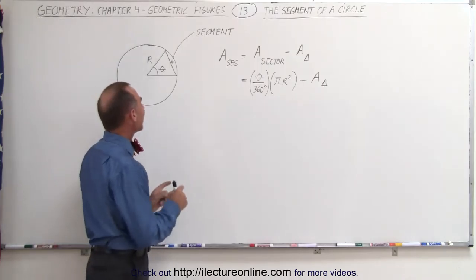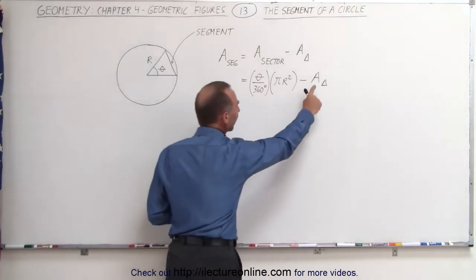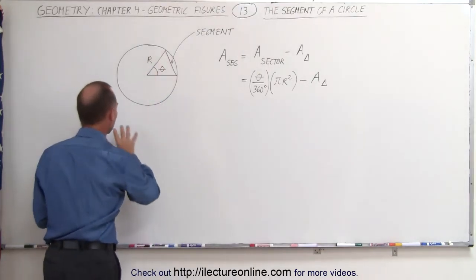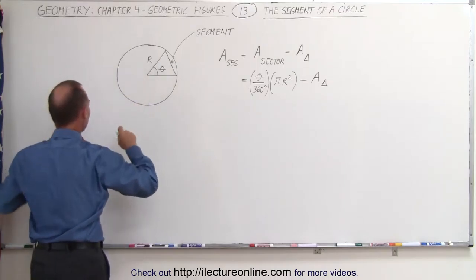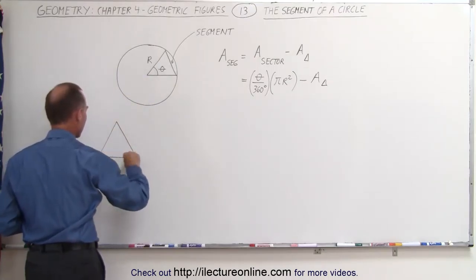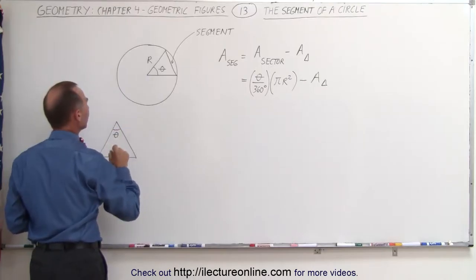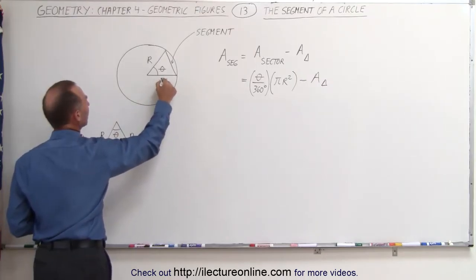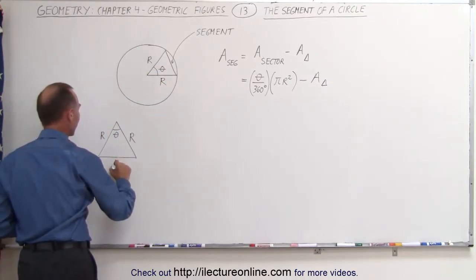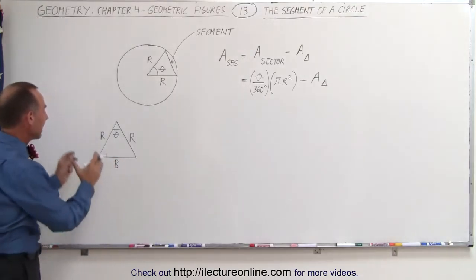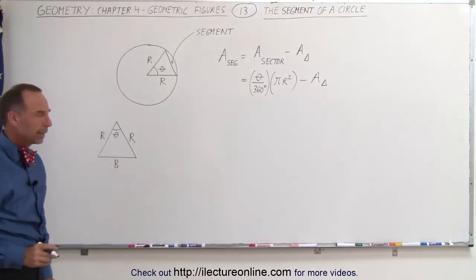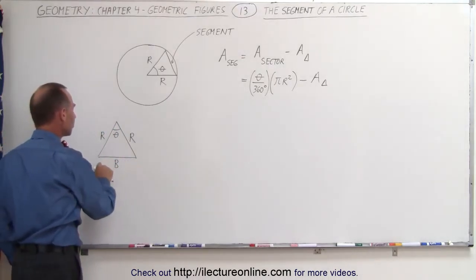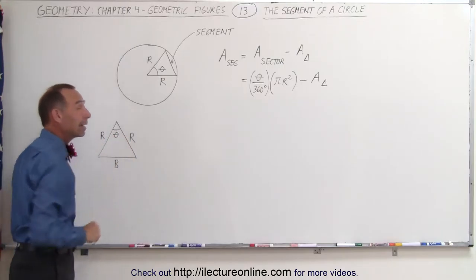In order to find the area of the segment, it all comes down to finding the area of the triangle. Let's take this triangle and draw it over here. Using the angle at the top, we have the angle theta, and on both sides we have the side r — the radius in both cases — and then we have the base of the triangle. We need a relationship between the height, the base, and r, which will come through the angle theta.